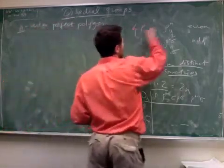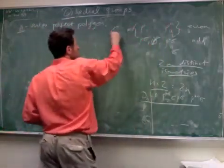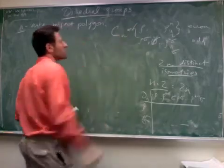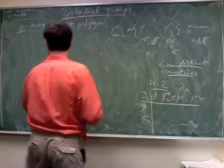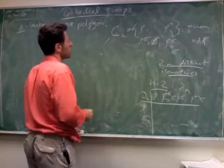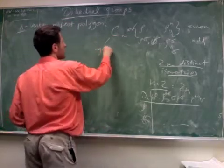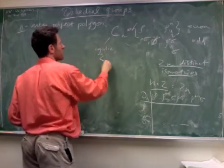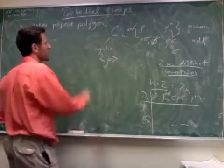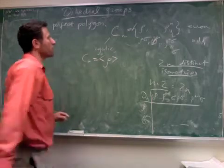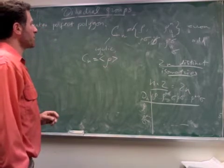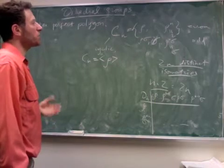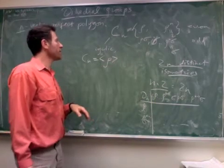So this set also forms a group and it's called Cn, the cyclic group, the n-cyclic group. So this is cyclic generated by rho, Cn is equal to rho, and consists only of the even transformations, only of rotations in the dihedral group.